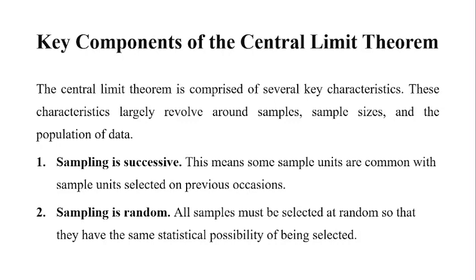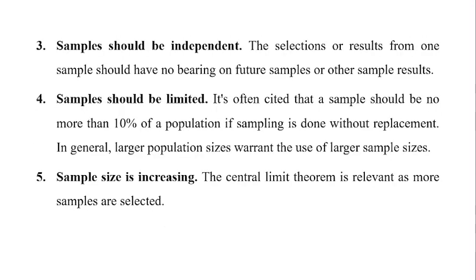Sampling is random — all samples must be selected at random so that they have the same statistical possibility of being selected. Samples should be independent — the selection result from one sample should have no bearing on future or other sample results. Samples should be limited — it is often cited that the sample should be no more than 10 percent of the population if sampling is done without replacement. In general, large population sizes warrant the use of large sample sizes. Finally, sample size is increasing — the Central Limit Theorem is relevant as more samples are selected.